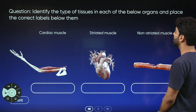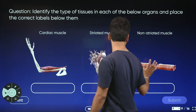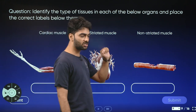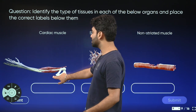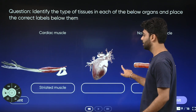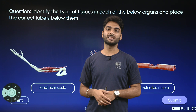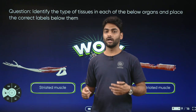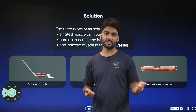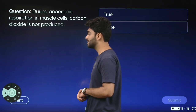Here is an amazing question: identify the type of tissues in each of the following organs and place the correct labels. The organs shown are a muscle in the hand, the heart, and a muscle of the internal organs. Looking at the diagrams — the one with visible striations represents striated muscles, the heart represents cardiac muscles, and the smooth internal organ muscles are non-striated or smooth muscles. Striated muscles are connected to bones and aid movement; cardiac muscles never fatigue; smooth muscles are found in internal organs.